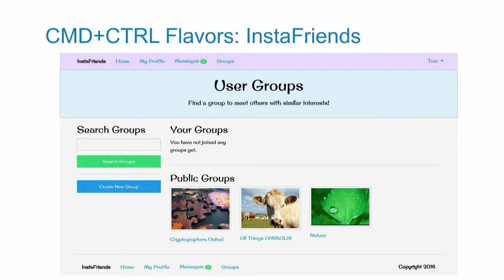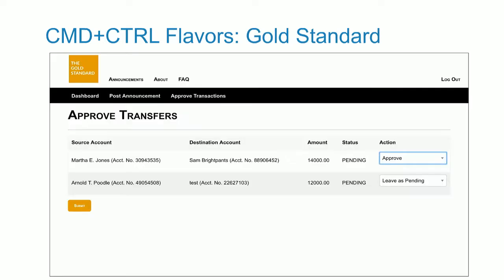Our social media site, InstaFriends, has invite-only groups where people can share information within their groups, as well as public groups that can share information widely. Essentially, there are ways to access information you shouldn't have access to — all different features and flows you'd expect in a social media site.